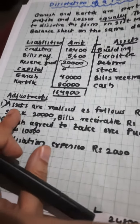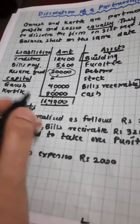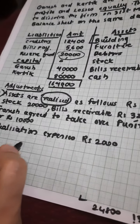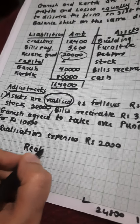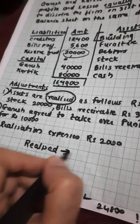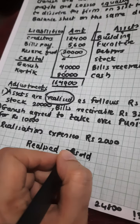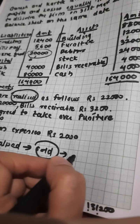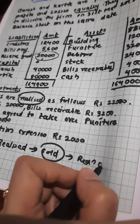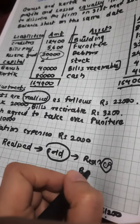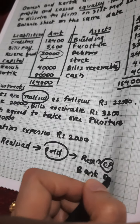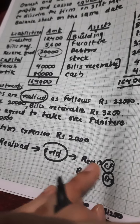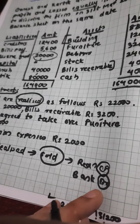Adjustment number one: assets are realized. Now remember one thing — whenever the word 'realized' appears, it means assets are sold. The effect of this is: Realization account credit, and Bank account debit.